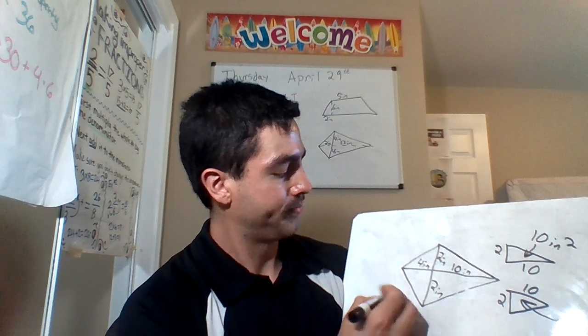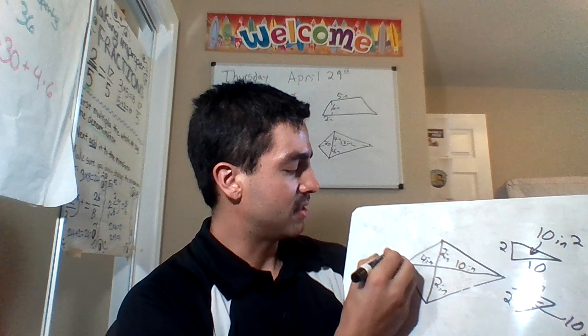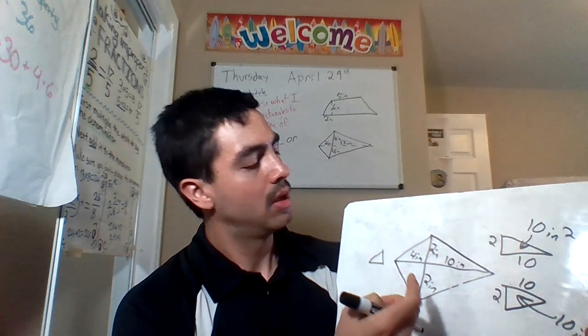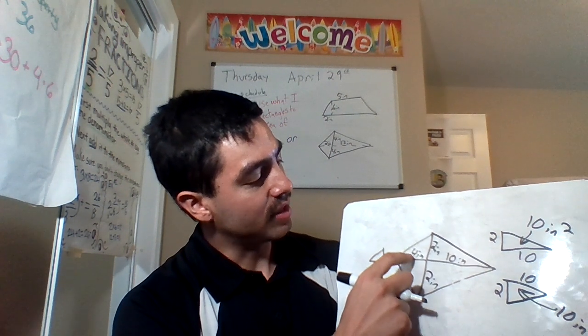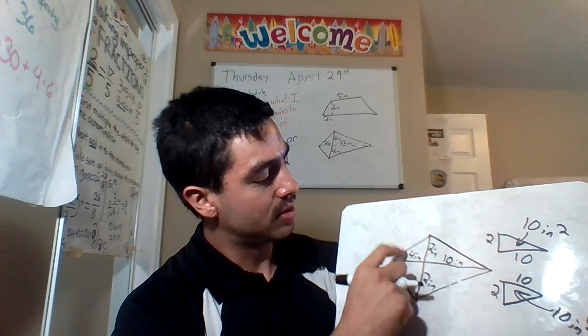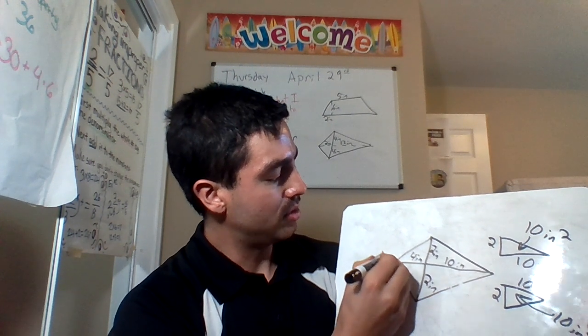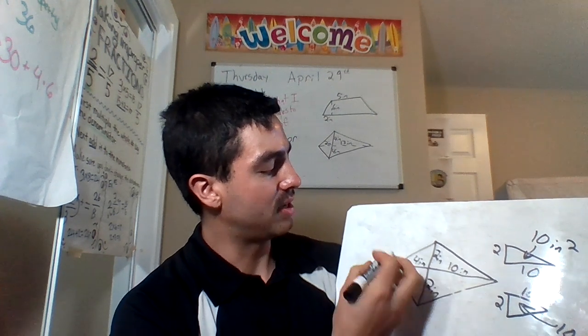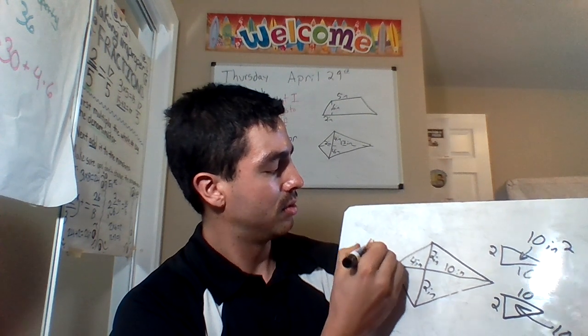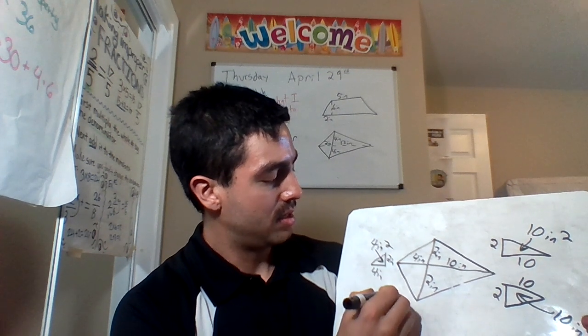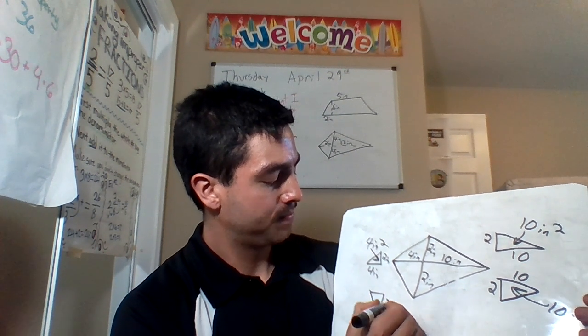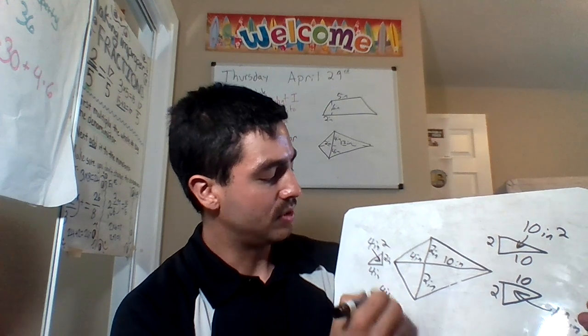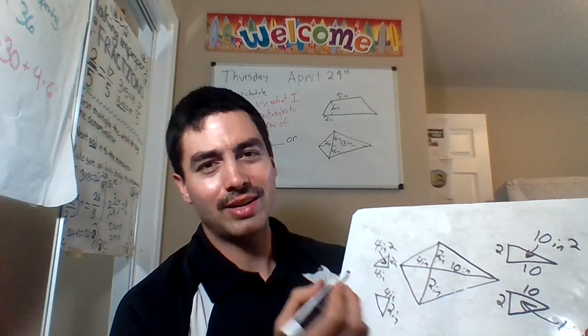Last one. A lot of times people have a hard time seeing these triangles. This base length right here. Just know that's for both sides. Let's see, that's two inches. That's four inches. Four times two is eight. Divide by two is four. And the other one, pretty much the exact same. Two times four is eight. Divide by two is four.